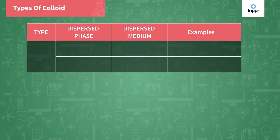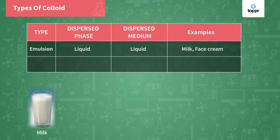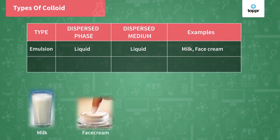The next type is emulsion, where the dispersed phase is a liquid and the dispersion medium is also a liquid. The example is milk, where oil droplets are mixed in water. Even face cream is one example.